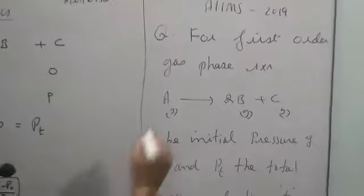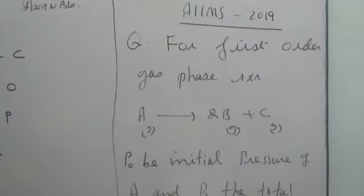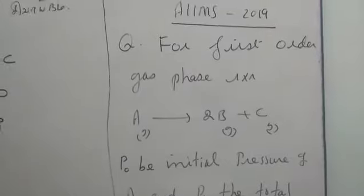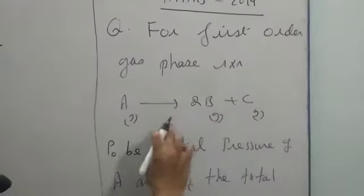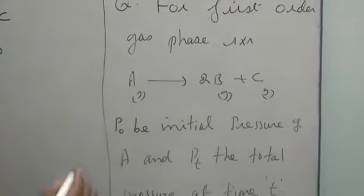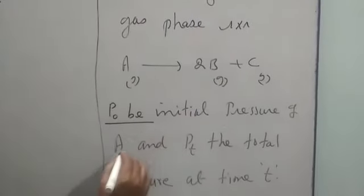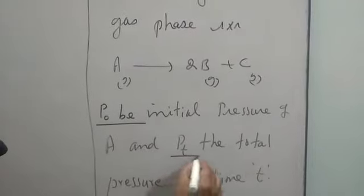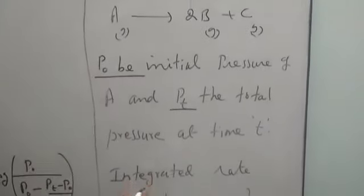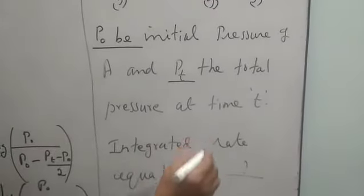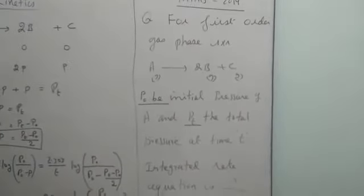Let us see the first question. AIIMS 2019 chemical kinetics, question 1 of 4. For the first order gas phase reaction, A decomposes in the gaseous state. P₀ is the initial pressure of A, and Pt is the total pressure at time T. The integrated rate equation is to be found from 4 available options. Since the options are not visible, let us work it out and find the integrated rate equation.